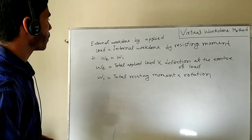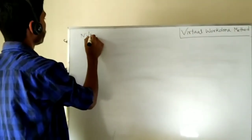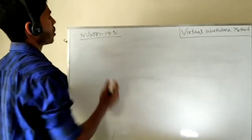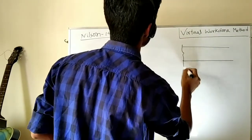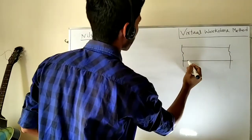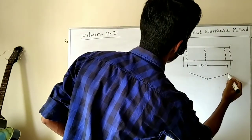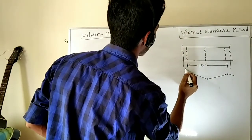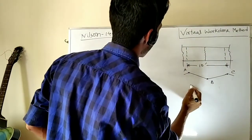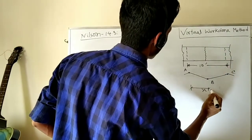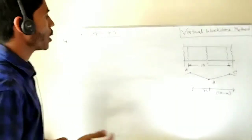Now we are going to solve a mathematical problem. We will solve problem number 14.3 from the Nilson book. This problem states that we have a continuous one-way slab with a deflected shape. Points A, B, and C are defined, where the distance AB is x and the remaining distance BC is 10 minus x.